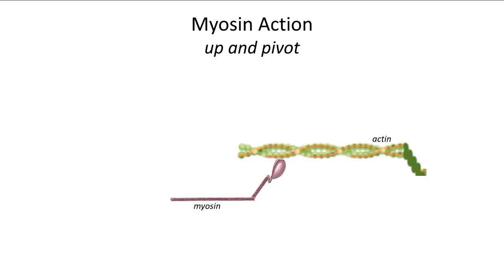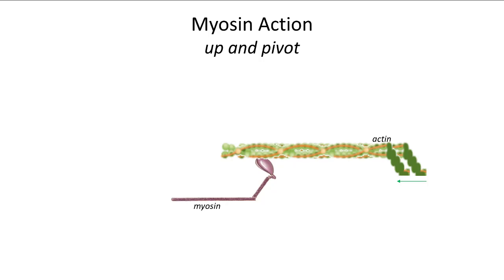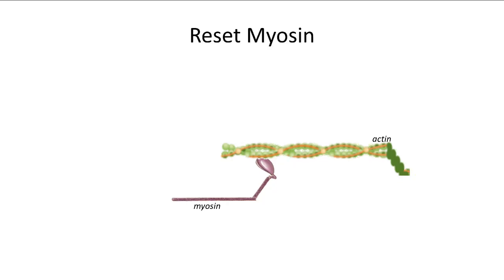Once myosin connects and binds with actin, the head pivots and, as it rotates, it pulls on the actin strand. Hundreds of these little heads pulling on actin on each side of myosin is what causes the muscle to contract and the Z-lines to come together. ATP made by the cell is required to reset myosin.